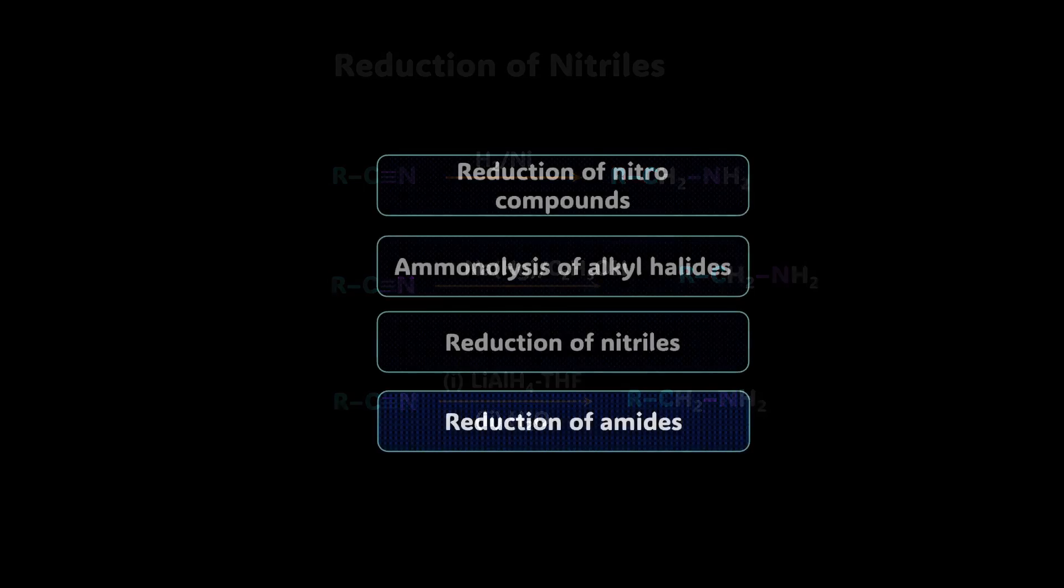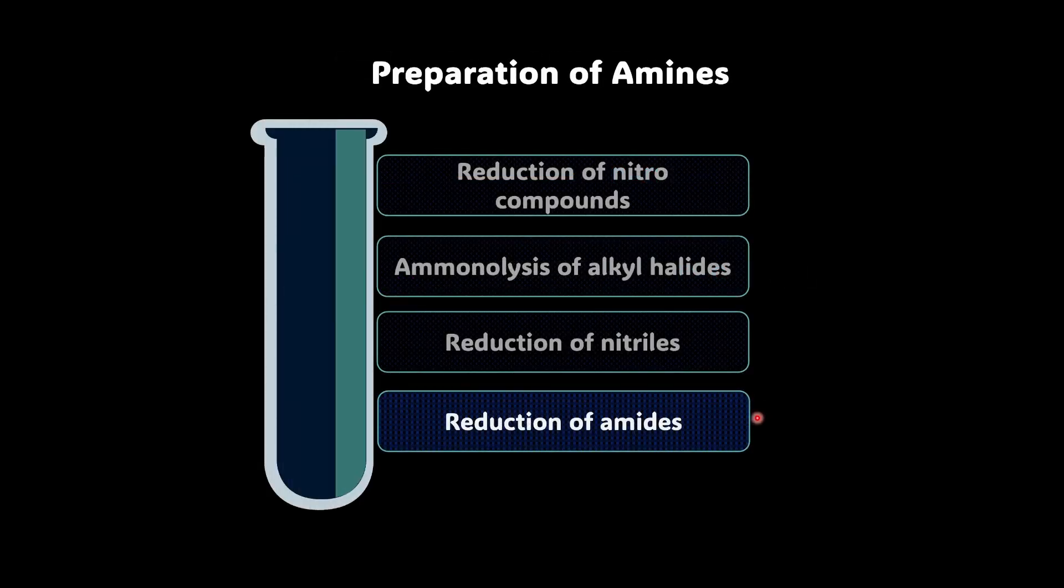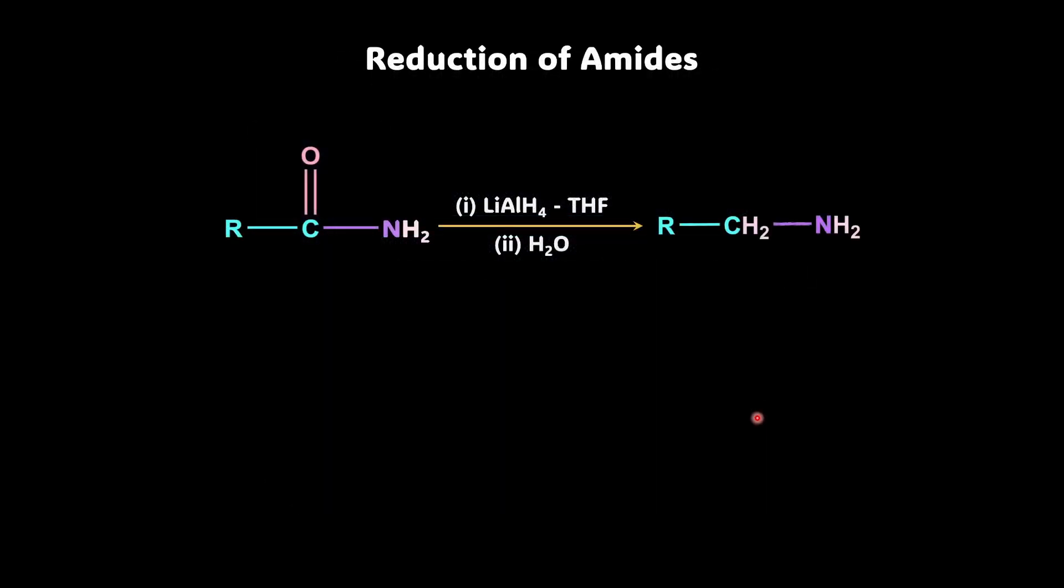Next method of production of amine is by reduction of amide. So for amides, we can again make use of the same reducing agent that we just learned. So you take an amide, you add to it lithium aluminum hydride in the presence of tetrahydrofuran, provide aqueous medium. And what you end up getting is this carbonyl group simply gets reduced. Right?